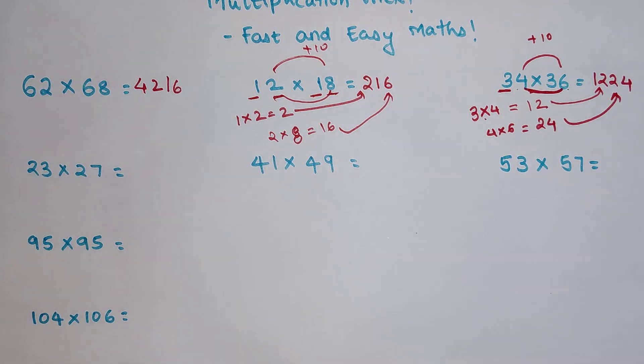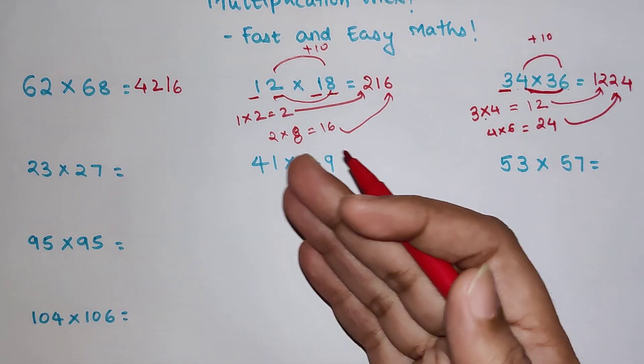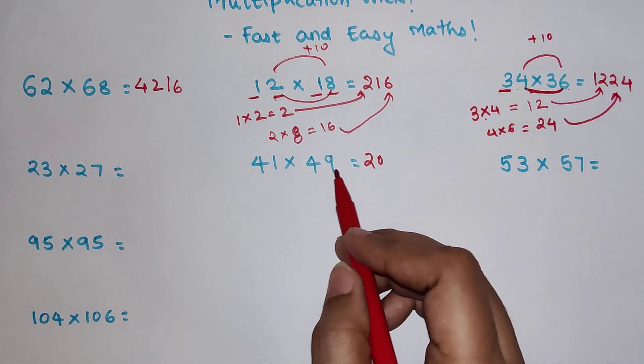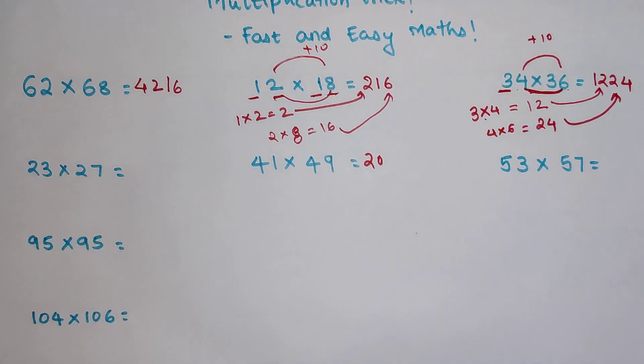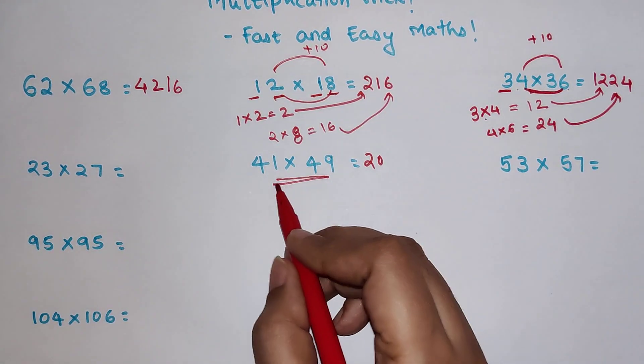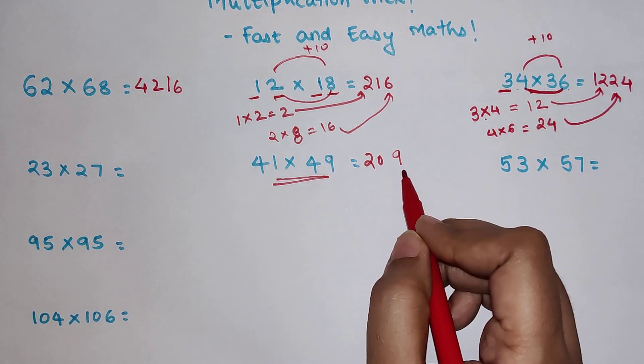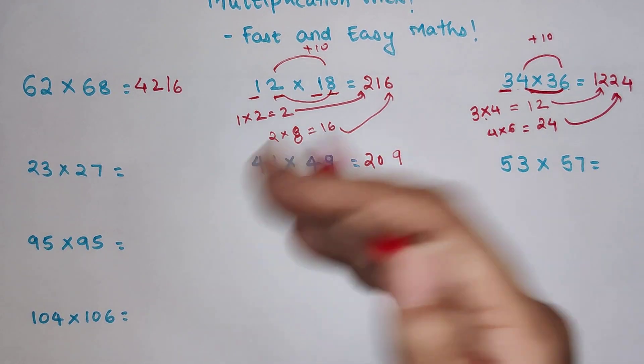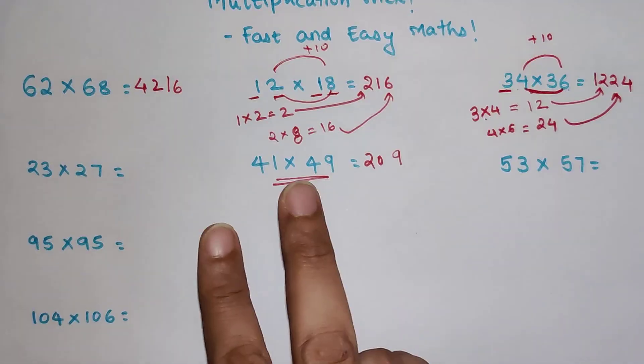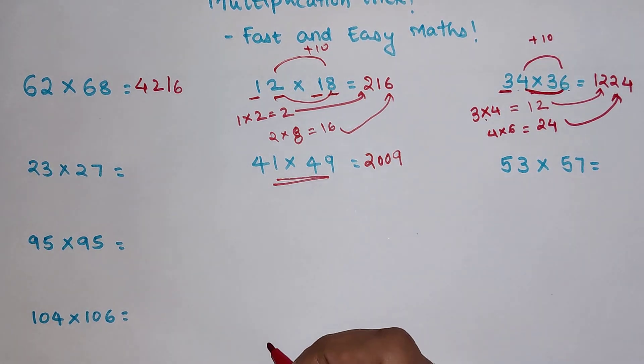Now let's do this orally. So 41 into 49. So what you do is you multiply 4 and 5 gets you 20. And 1 into 9 gets you what, 9. Now here I have purposely taken this particular example. Because people will write 9 directly. But the answer is not 209. Your unit's answer or the second answer should always be in 2 digit. So your answer will be 2009.